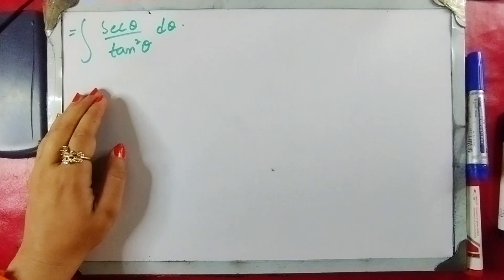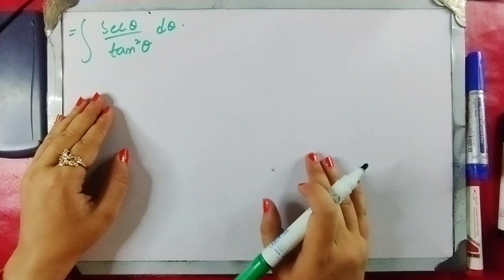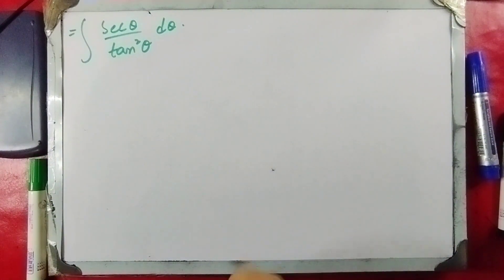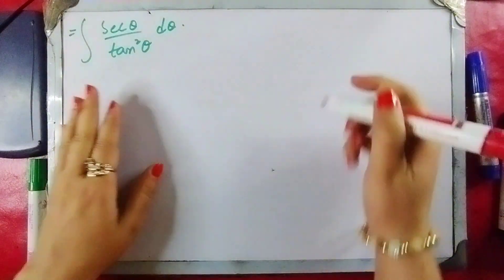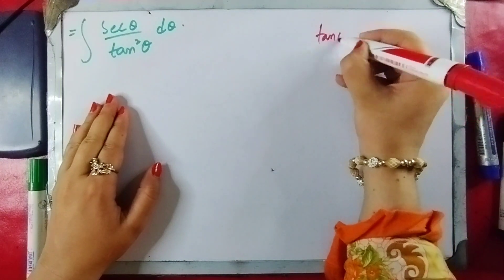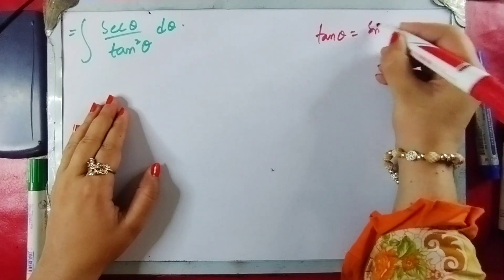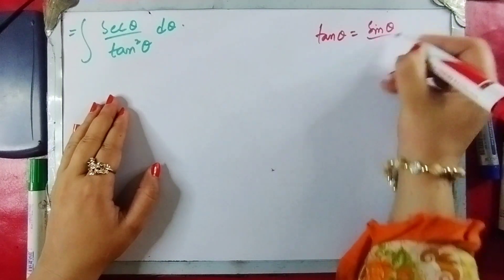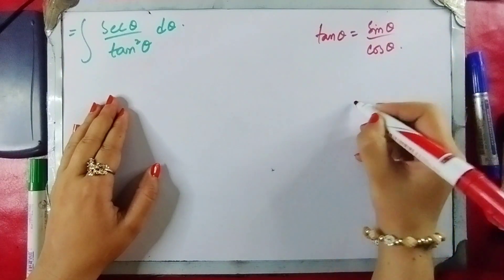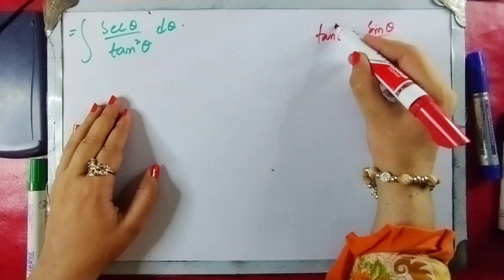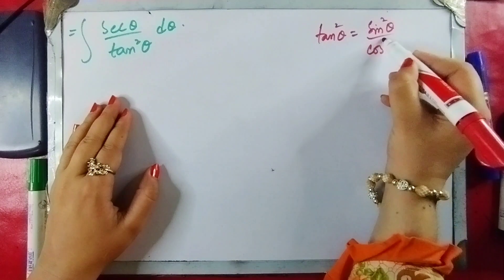Now, how do we take this integral? We will use simplifications. Let's take a tangent simplification. Tangent is equal to sin over cos of theta, and if we take tangent squared, it is equal to sin squared over cos squared.